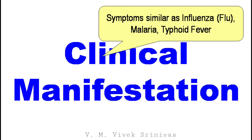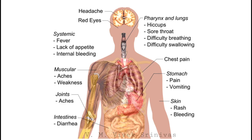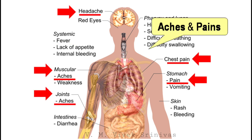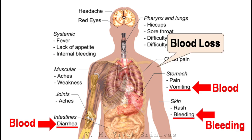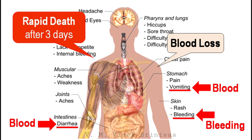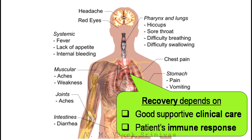Clinical manifestations: symptoms appear similar to common flu, malaria, and typhoid fever. Symptoms include elevated body temperature; aches and pains such as headache, muscle aches, joint aches, chest pain, and stomach pain; gastrointestinal symptoms like diarrhea and vomiting with blood; and internal and external bleeding. Since there is blood loss, blood transfusion is necessary. Rapid death may occur after a mean of three days. Recovery completely depends upon good supportive clinical care and the patient's immune response.